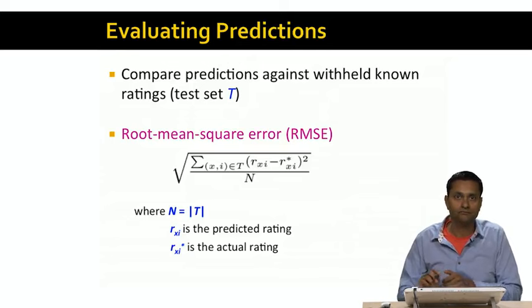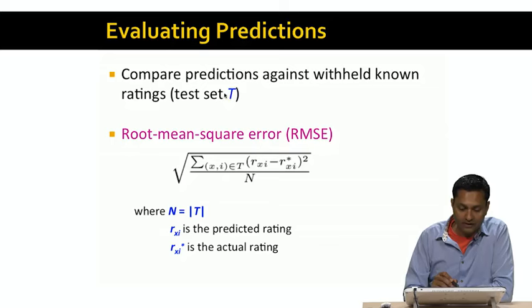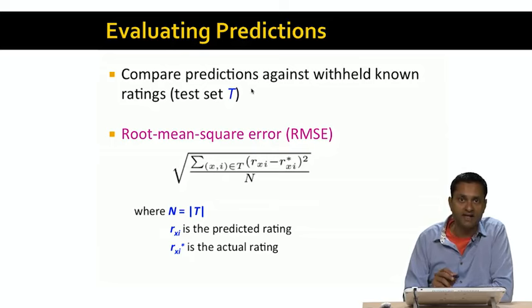So the trick is to compare the predictions against the withheld known ratings, or the test set, T. And the most common measure is a measure called the root mean square error, or RMSE for short.